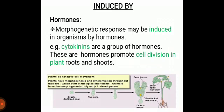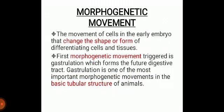Morphogenesis responses may be induced by hormones. Hormones are chemical messengers secreted from one part of the body and act on the other part, that is called the target cell or target part. For example, cytokinins are a group of plant hormones which promote cell division in plant roots and shoots and promote growth. Plants do not have cell movements. Plants have morphogenesis and differentiation throughout their life cycle which starts at the apical meristem. Animals have morphogenesis only in early development — the movement of cells in the early embryo changes the shape and form of differentiating cells and tissues.